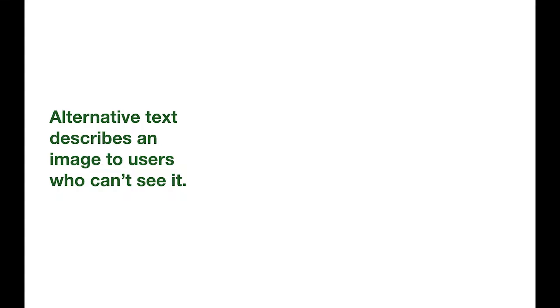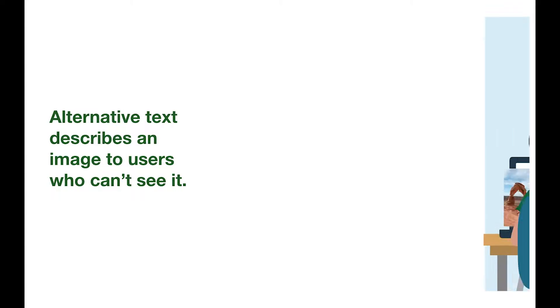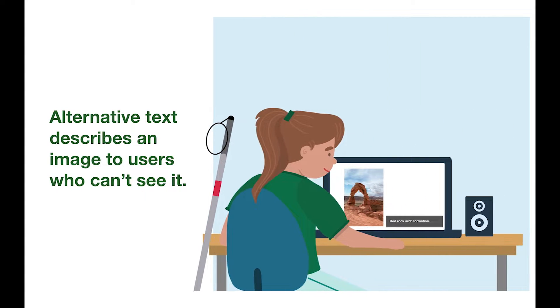Alternative text describes an image to users who cannot see it. Their screen reader announces the alternative text to them. It's important to check your images' alternative text to make sure all your users get the image's content.